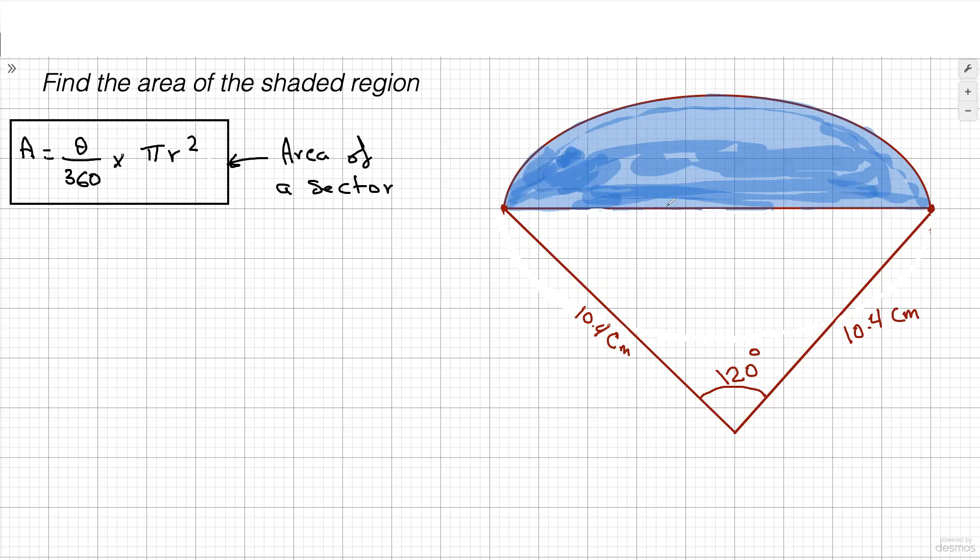So the area of a sector, there's a formula right here that you could use, and it's straightforward. So A is the area, theta is the angle in between the two lines right here, and then R is the radius.